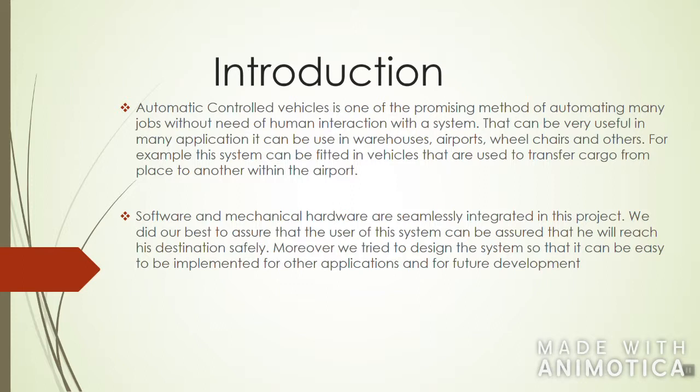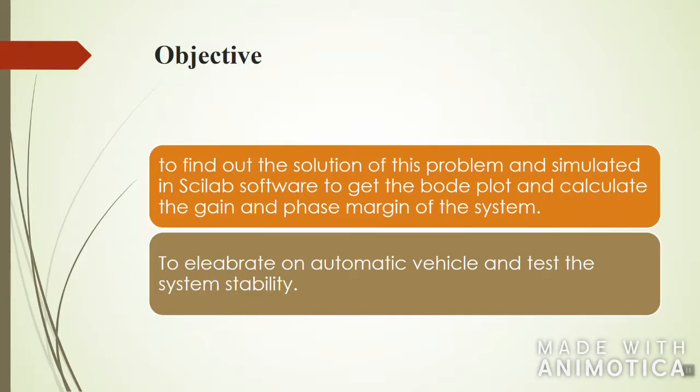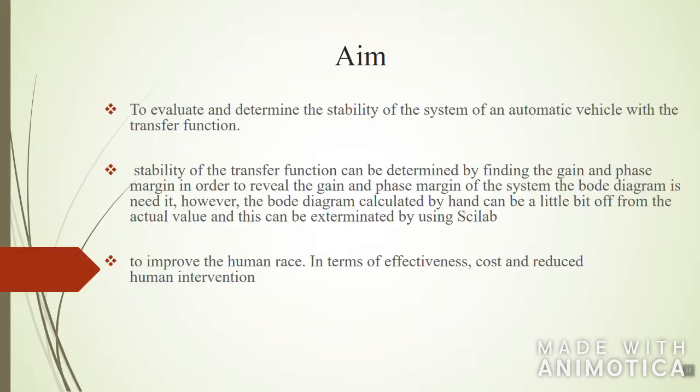Objective: to find out the solution of this problem and simulate it in Scilab software to get the Bode plot and calculate the gain and phase margin of the system, to elaborate on automatic vehicle and test the system stability. The aim is to evaluate and determine the stability of the system of an automatic vehicle with the transfer function.